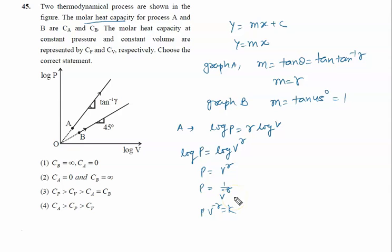We know for polytropic process, molar specific heat is given by the formula C = CV + R/(1-x), where x is the power. So CA is given by CV + R/(1-(-γ)). So CA will be CV + R/(1+γ). This is equation number 1.